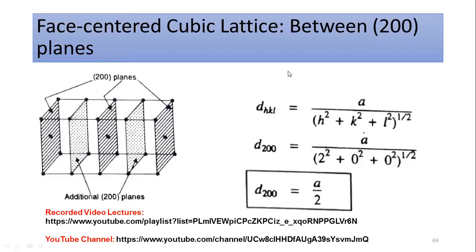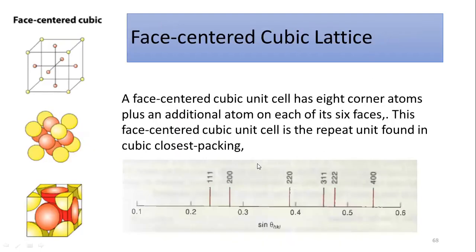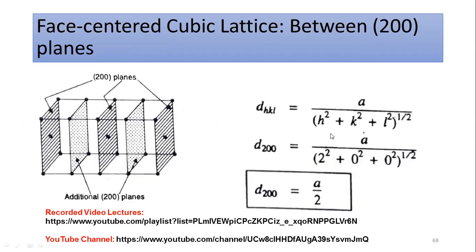Let's start with the first plane, which is the (200) plane, shown here for a face-centered cubic lattice. You use the standard d-spacing equation, which I have already explained in previous videos. Putting in the values of h, k, and l — the 2 squared under the root cancels out — what is left gives a divided by 2 as the d-spacing, or interplanar separation, of the (200) plane.